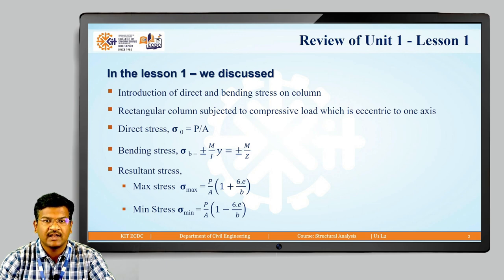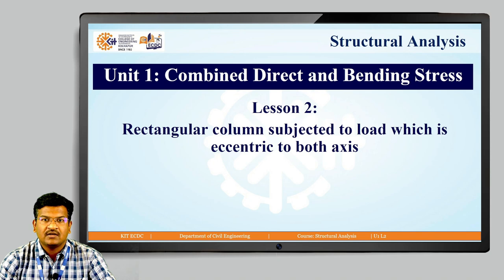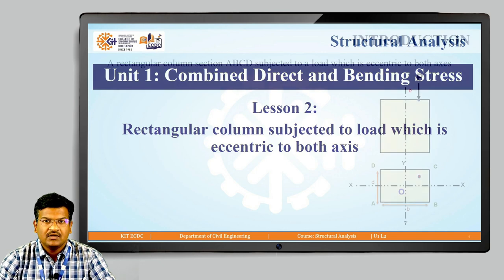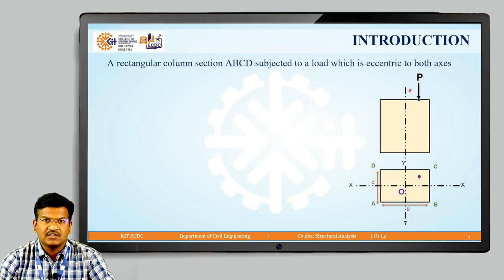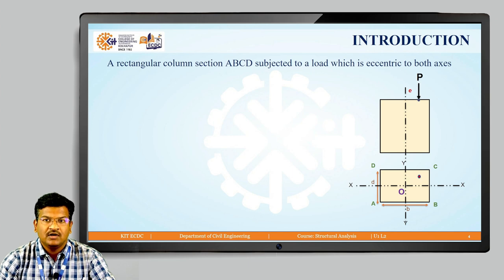Now we are going to learn about the rectangular column subjected to a load which is eccentric to both axes. Consider a rectangular column ABCD in cross section, subjected to a compressive load which is eccentric with both axes. In the figure, P is the eccentric load acting on the column, and that load is eccentric with both axes.